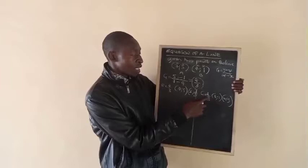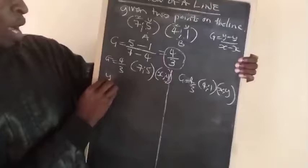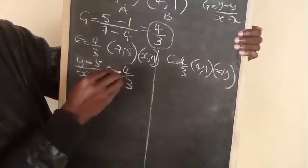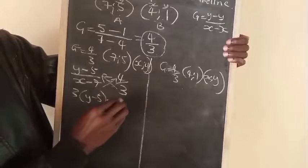When we wanted to get the equation, we had one point. y minus 1 over x minus 4 is equal to 4 over 3, the gradient. We cross multiply.